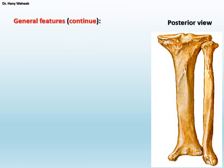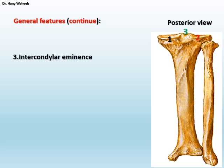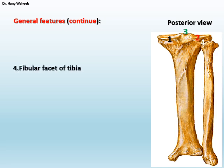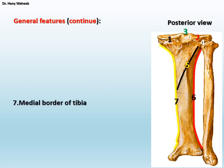General features on the posterior view of tibia and fibula include: 1. Medial condyle of the tibia; 2. Lateral condyle of tibia; 3. Intercondylar eminence; 4. Fibular facet of the tibia, which lies on the posterior inferior aspect of the lateral condyle of the tibia; 5. Soleal line on the posterior surface of the tibia; 6. Interosseous border of the tibia, directed laterally towards the fibula.